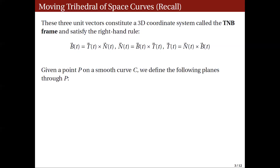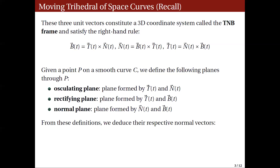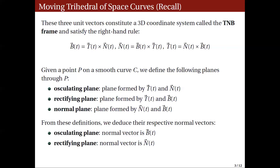Given a point P on a smooth curve C, we define the following planes at P. The osculating plane is formed by T(t) and N(t). The rectifying plane is formed by T(t) and B(t). The normal plane is formed by N(t) and B(t). Using the right-hand rule, we can deduce the respective normal vectors: the osculating plane has normal vector B(t), the rectifying plane has normal vector N(t), and the normal plane has normal vector T(t).